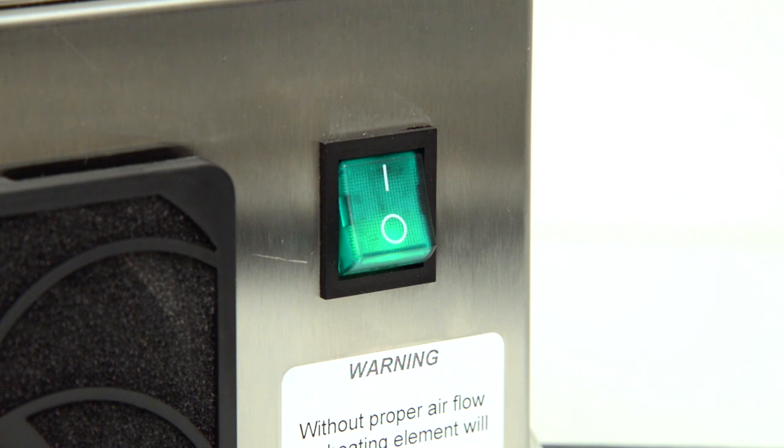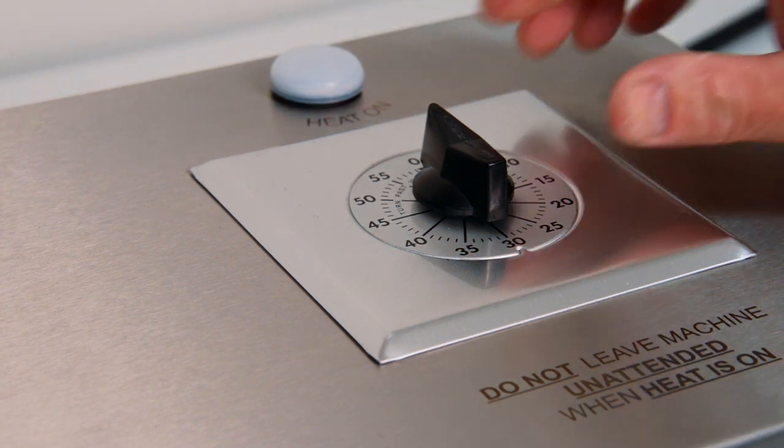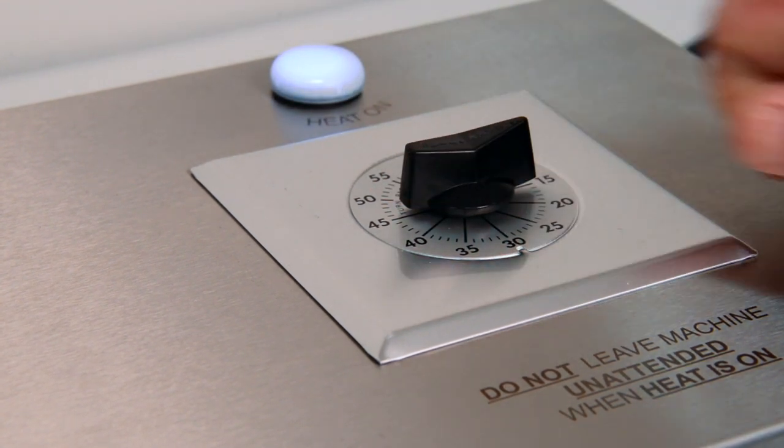The heat source for shrinking the CleanSeal capsule is controlled by a timer that can be set up to 60 minutes. When turned on, a white light will illuminate.